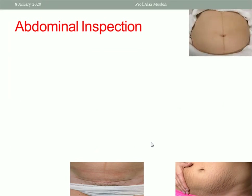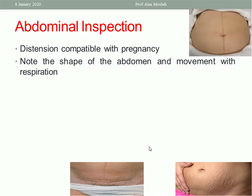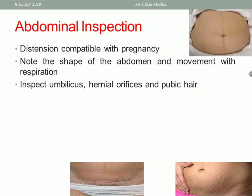For abdominal inspection: observe the exposed abdomen for distension compatible with pregnancy and whether the enlargement is compatible with the gestational age. Note the shape of the abdomen and its movement with respiration. The longitudinal diameter should exceed the transverse diameter. Check whether the umbilicus is shifted upward. Respiration becomes mainly thoracic during pregnancy. Inspect the umbilicus for any infection or hernia.